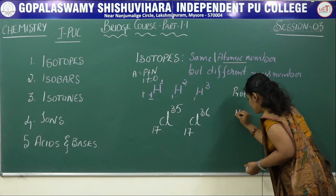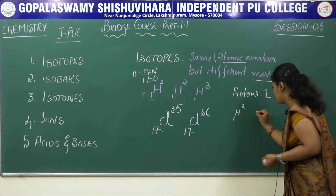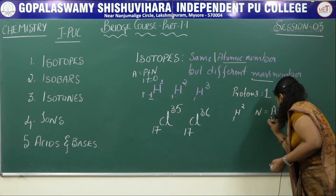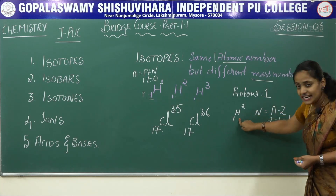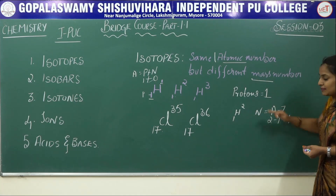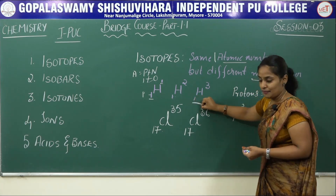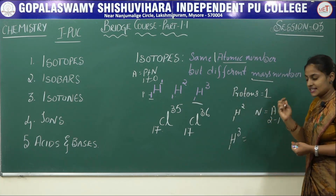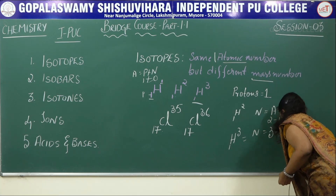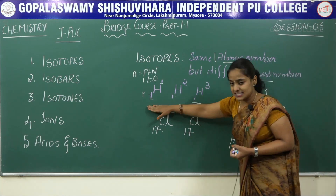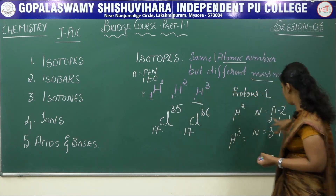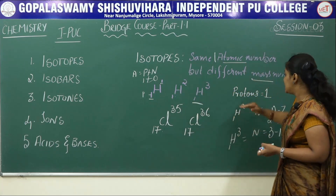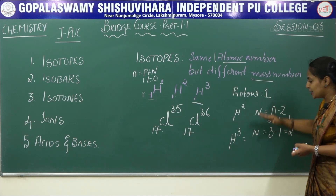For the second example H-1-2, the number of protons is 1. Using N = A minus Z, we get 2 minus 1, which equals 1 neutron. For the third isotopic form of hydrogen, N = 3 minus 1, which equals 2 neutrons. So in the first case neutrons = 0, second case neutrons = 1, third case neutrons = 2. Therefore isotopes are species having the same number of protons but different numbers of neutrons.